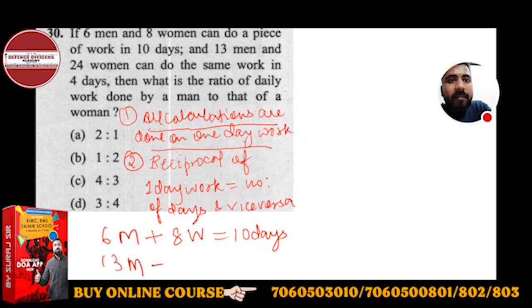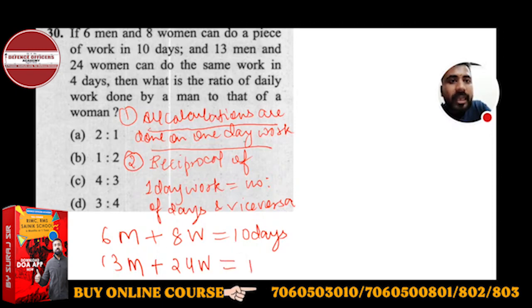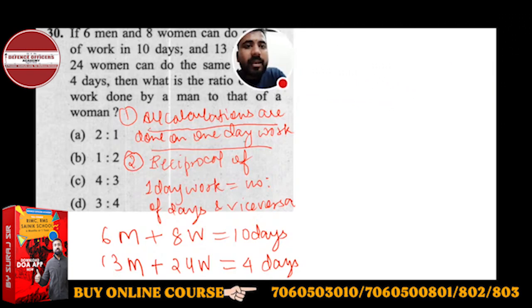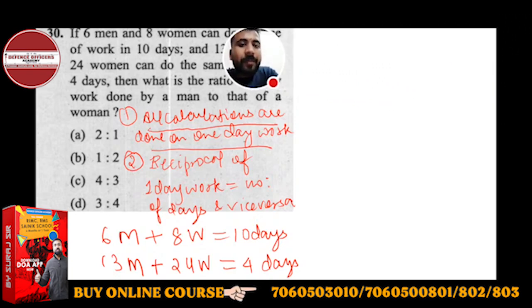When 6 men and 8 women work together, they complete the work in 10 days. The second condition given is: 13 men plus 24 women working together will take 4 days. These are the two conditions, and then you have to find the ratio of man to woman.